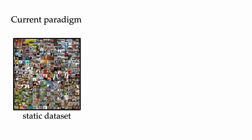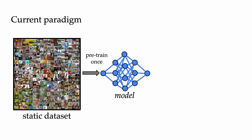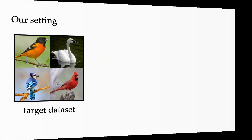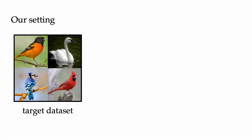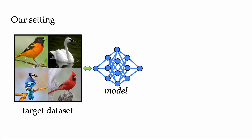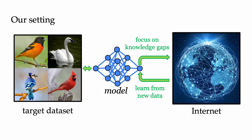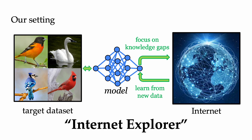In contrast to the current paradigm where someone uses a static dataset to pre-train a general purpose model that you then fine-tune on your target dataset, we flip the picture. We start with a target dataset that we care about, and we want to train a specialized model that does extremely well on this target dataset. We do this by taking advantage of the data available on the Internet, iteratively downloading and learning from new data, and focusing on our remaining knowledge gaps. Since we iteratively search the Internet for relevant training data, we call our method Internet Explorer.